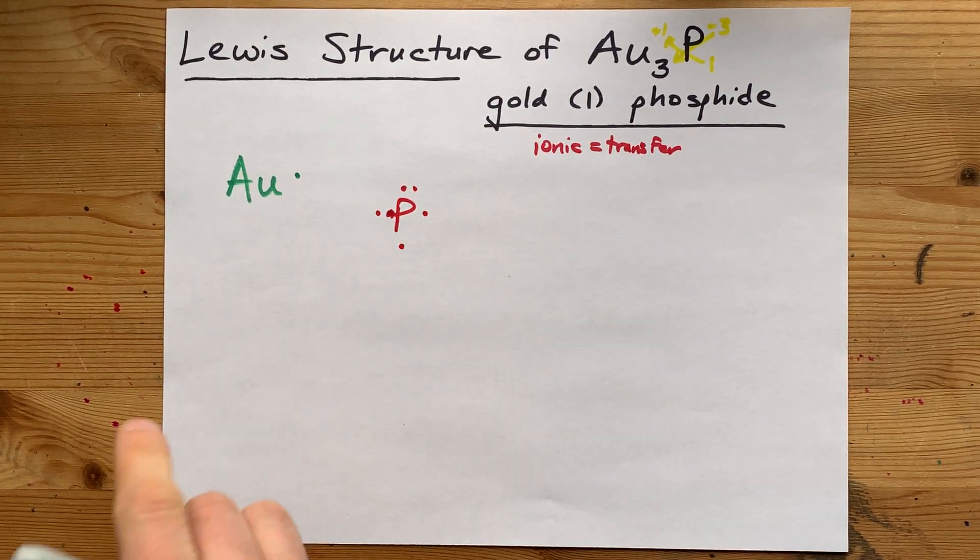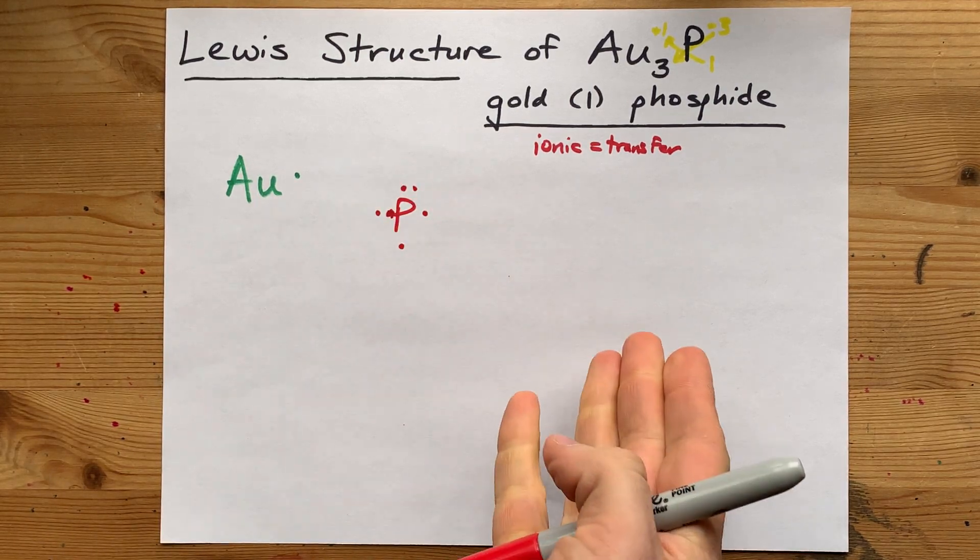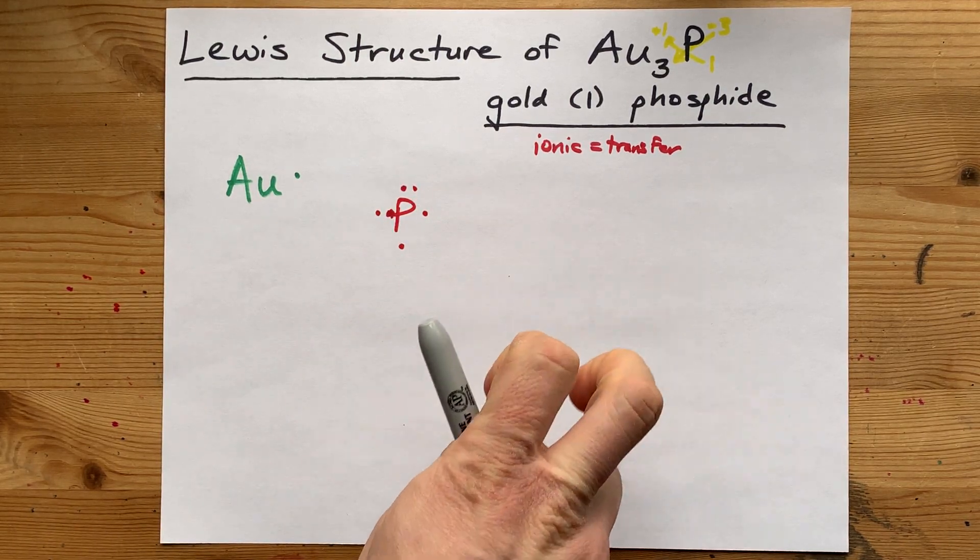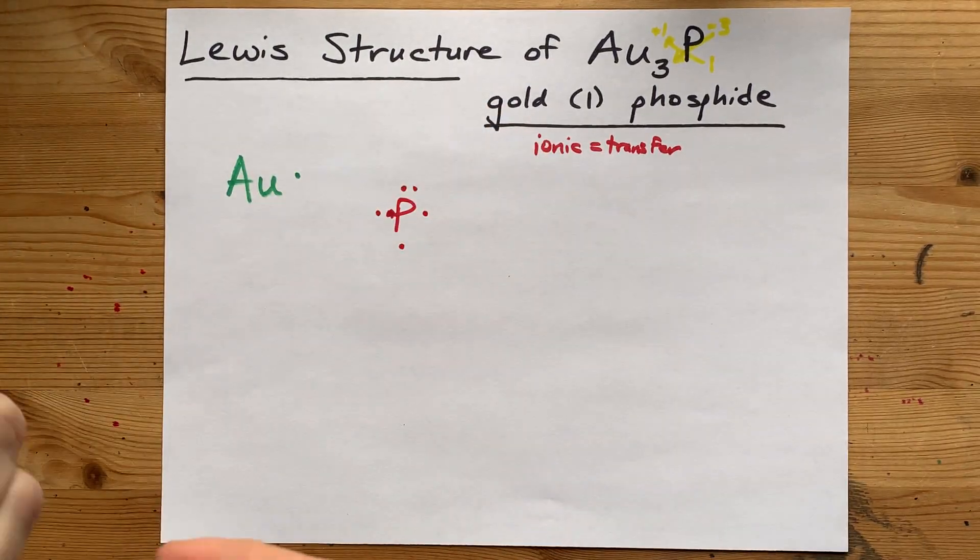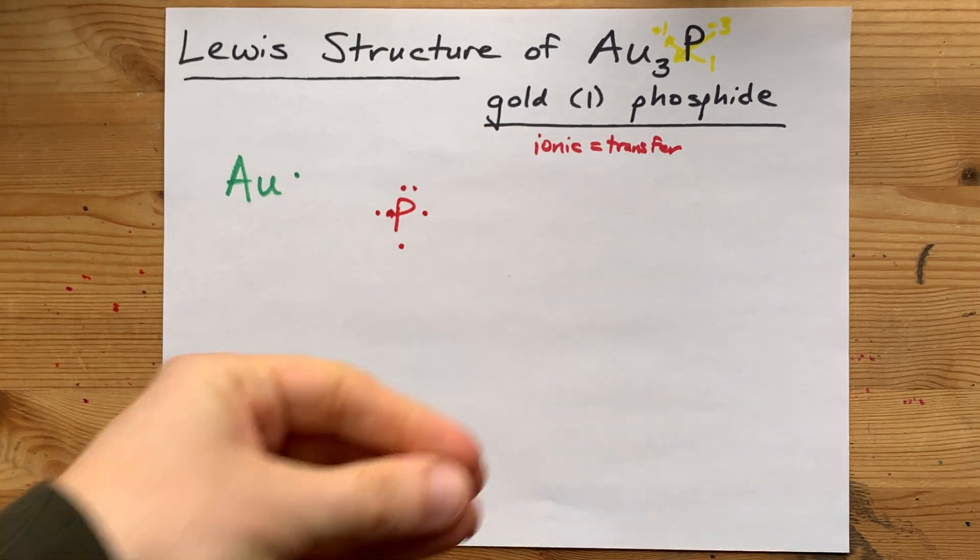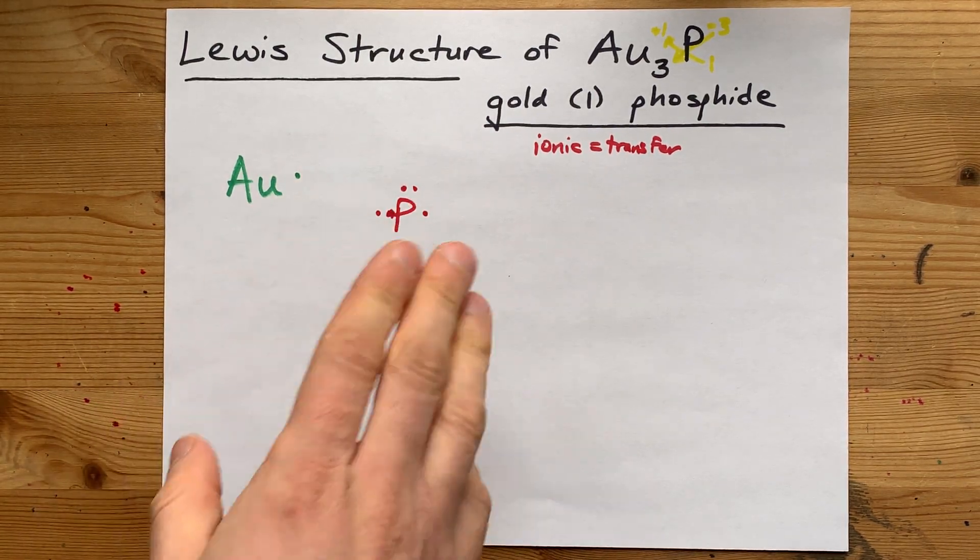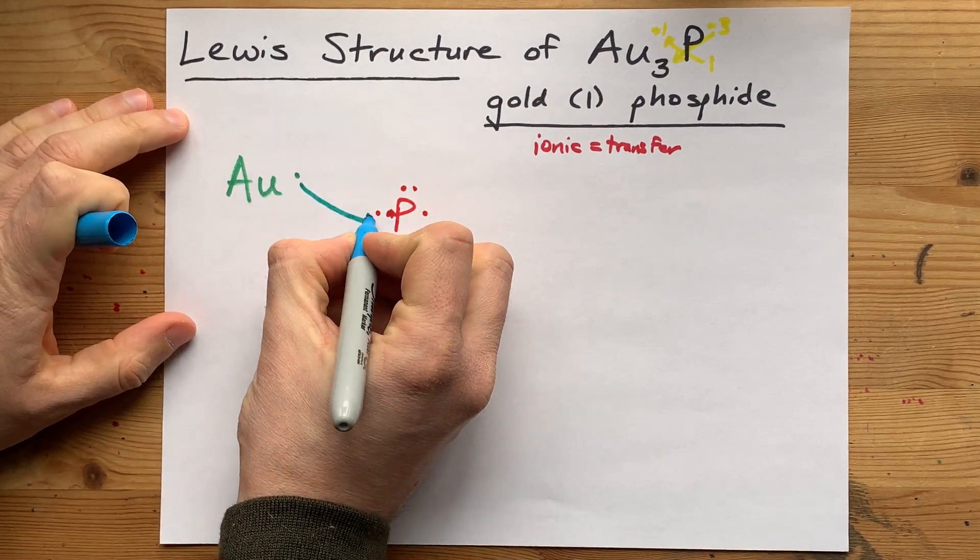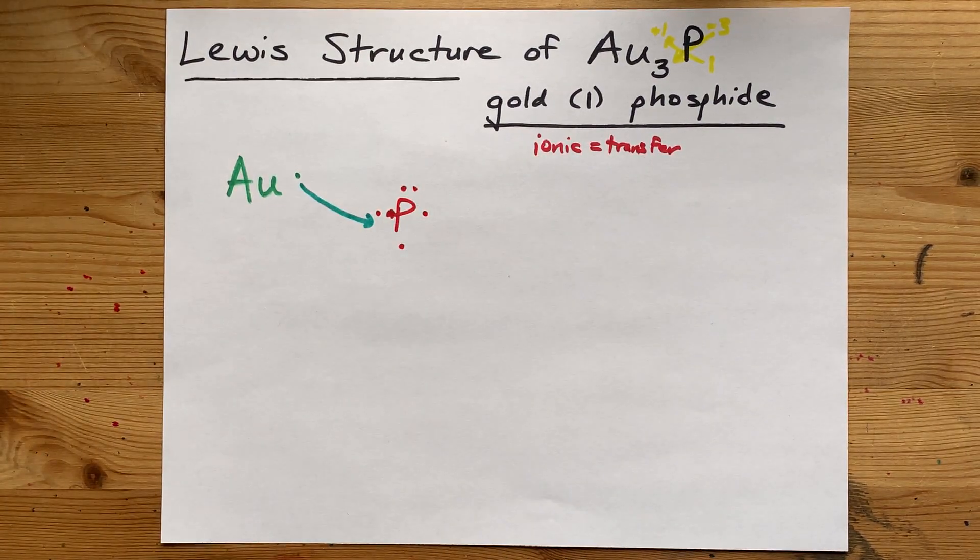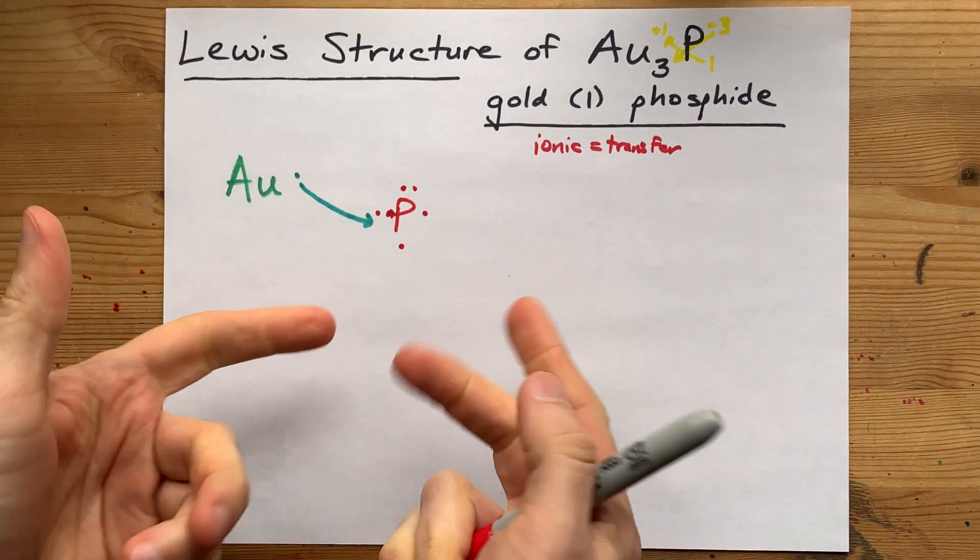Non-metals want a full octet of 8 electrons in their outer shell. That's called the octet rule. And so, this phosphorus, having 5 electrons, needs 3 extra to complete its octet. Gold, a metal, is willing to give up its electron. And so, it will give its electron to phosphorus. And now, the phosphorus has 6 electrons in its outer shell. But that's still not 8.